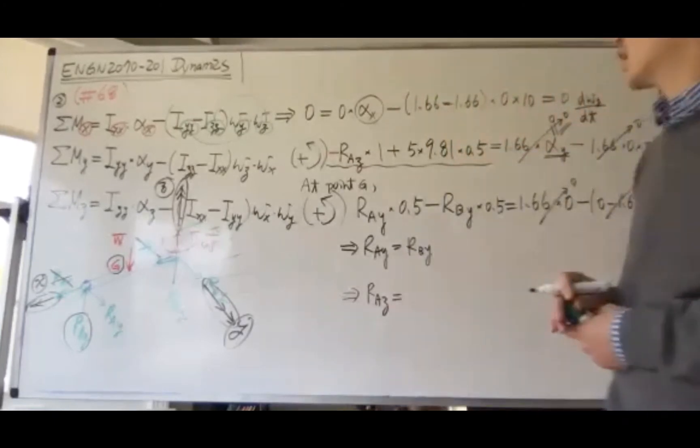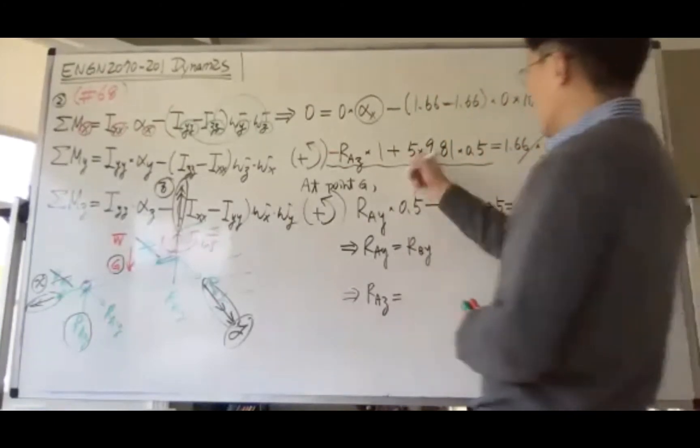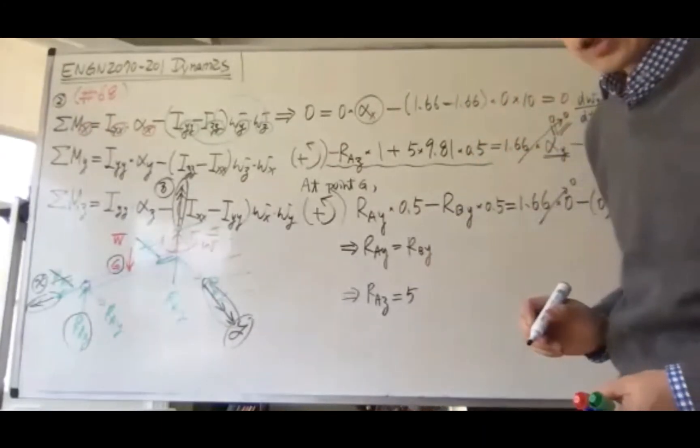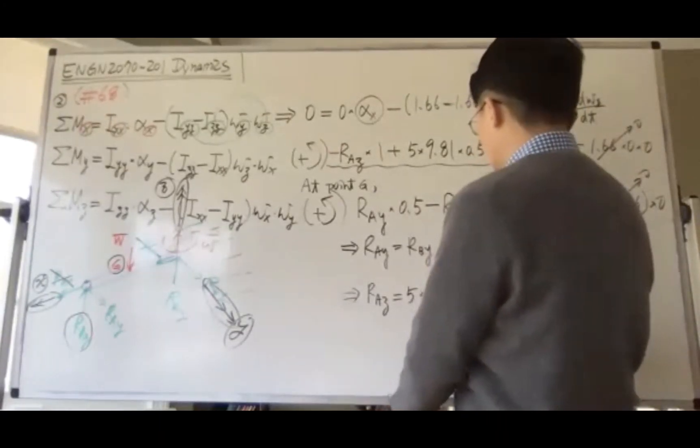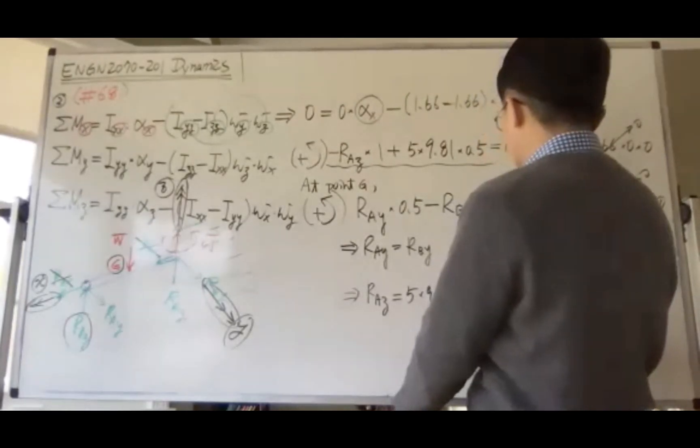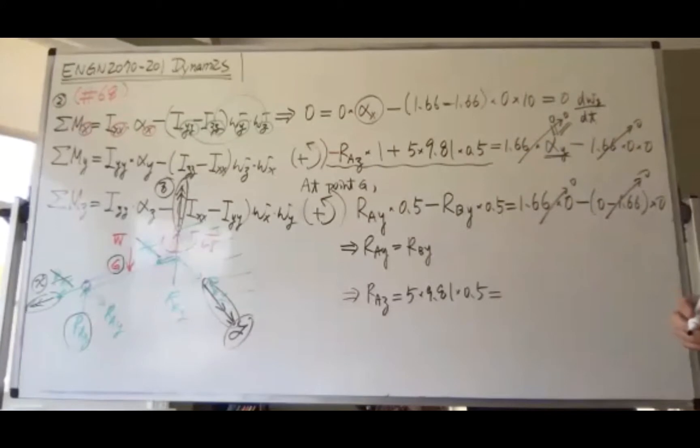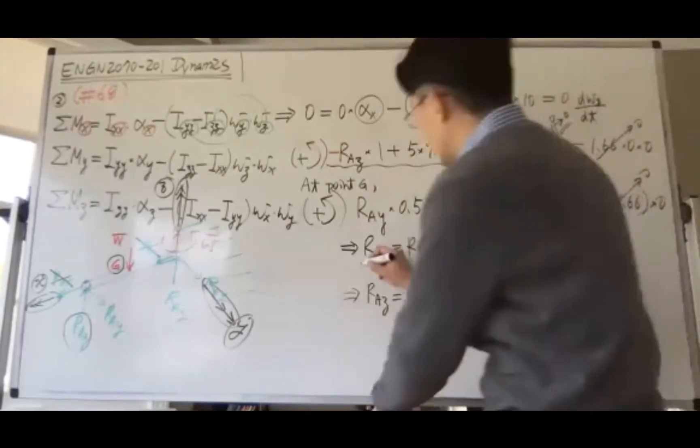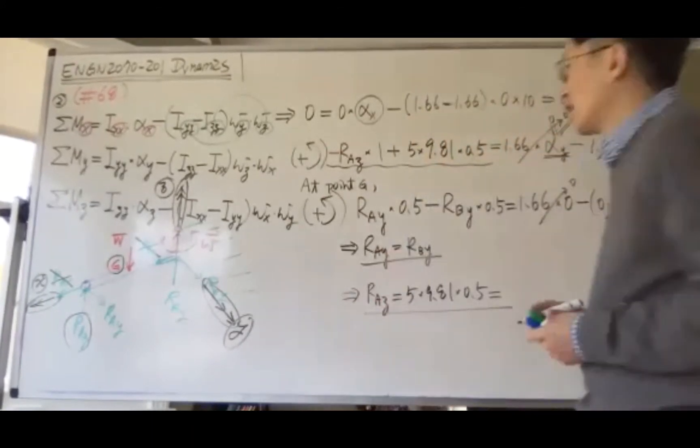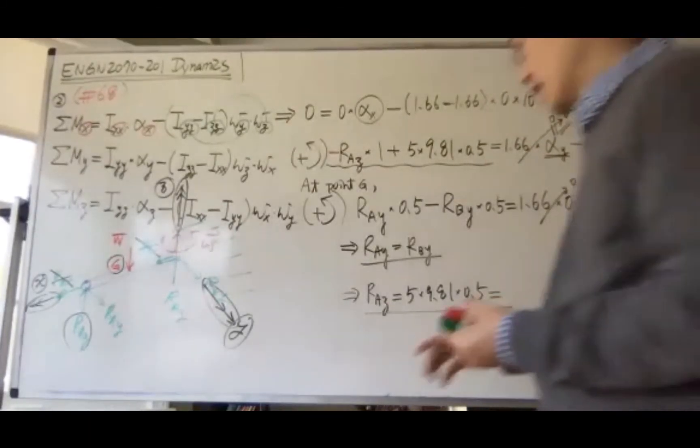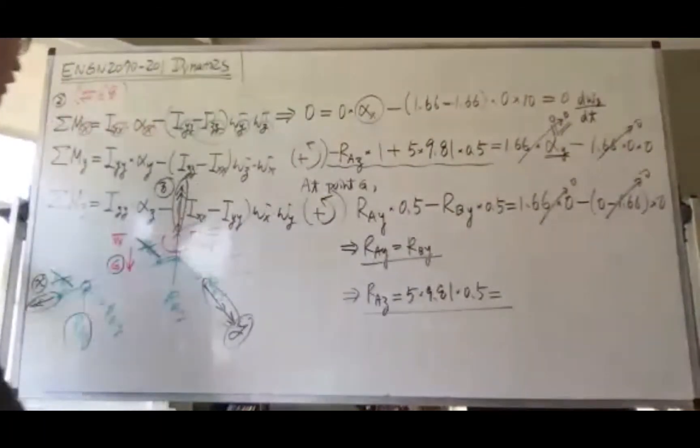From here, R_az equals 5 times 9.81 times 0.5. Once you have this relationship and this value, you use force equilibrium to find them.